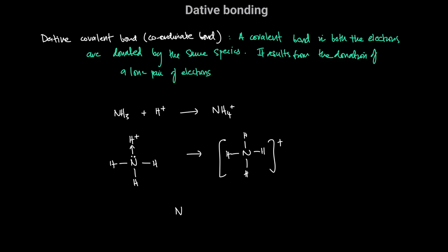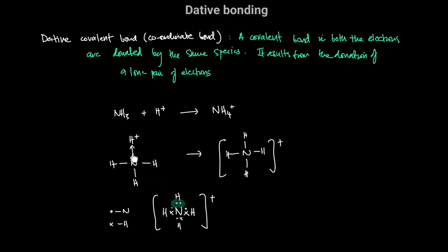Looking at the dot-and-cross diagram: nitrogen has made three single bonds with the three hydrogen atoms — dots represent nitrogen, crosses represent hydrogen. The fourth bond between nitrogen and hydrogen has both electrons coming from nitrogen, which we must clearly show. Three of the N–H bonds involve equal sharing of electrons, whereas the fourth covalent bond was formed because nitrogen donated both of its electrons — a dative covalent bond, also known as a coordinate bond.